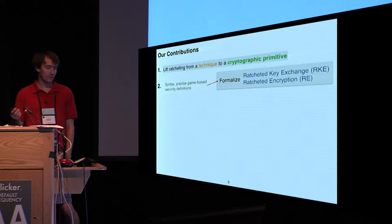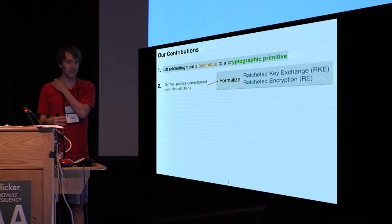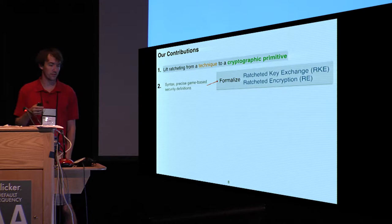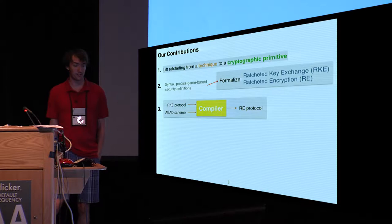What do I mean by formalized? Well, the two parts are just defining some sort of syntax to actually define what these objects are that we're talking about, and then providing strong game-based security definitions, specifying exactly what security we're hoping for these to achieve. The ultimate goal of those two primitives I discussed is, of course, ratcheted encryption. Our whole goal here is to have encryption, to talk to each other.